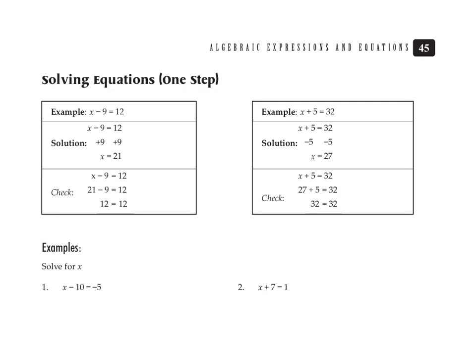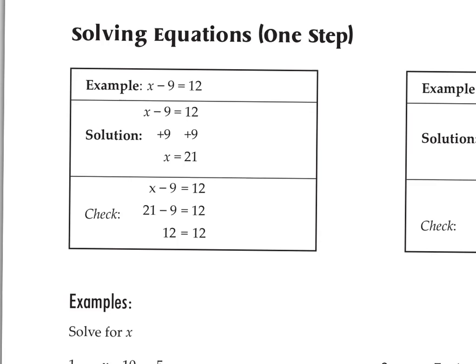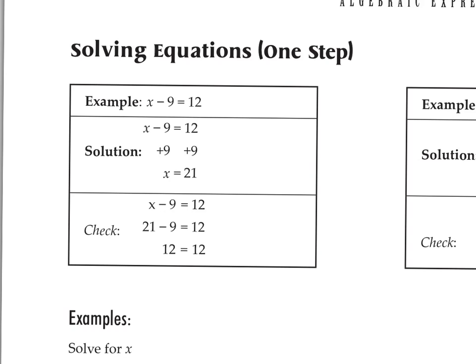That was verifying a given solution. How do we actually find solutions if they're not given? The basic premise with equations is that you can undo operations being done to x by using the opposite operation. Whatever you do to one side of the equation to undo, you also have to do to the other side. The equal sign separates the two sides — whatever you do to isolate x, you also do on the other side.